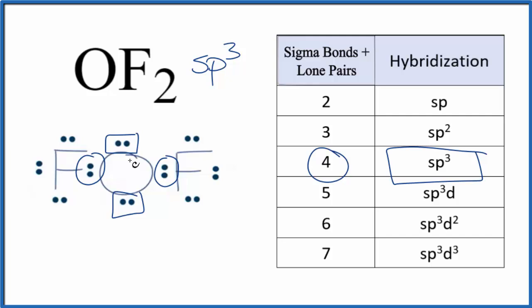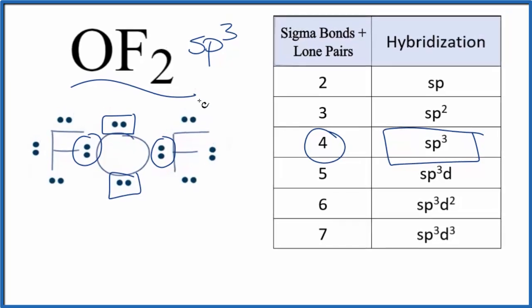The fluorine itself would also be sp3 hybridized, and you can figure that out using the techniques that I showed you in this video. This is Dr. B with the hybridization for OF2, oxygen difluoride.